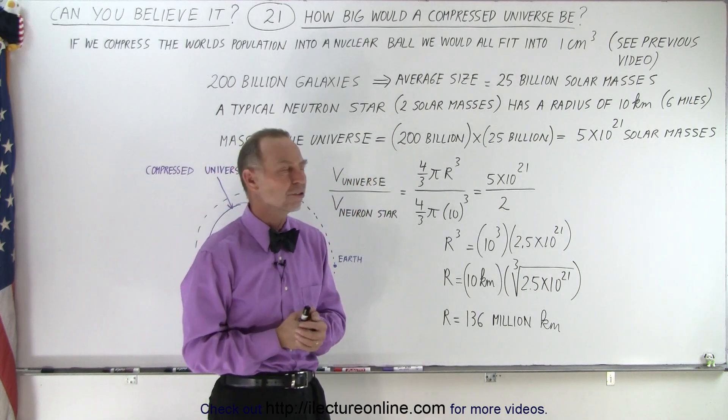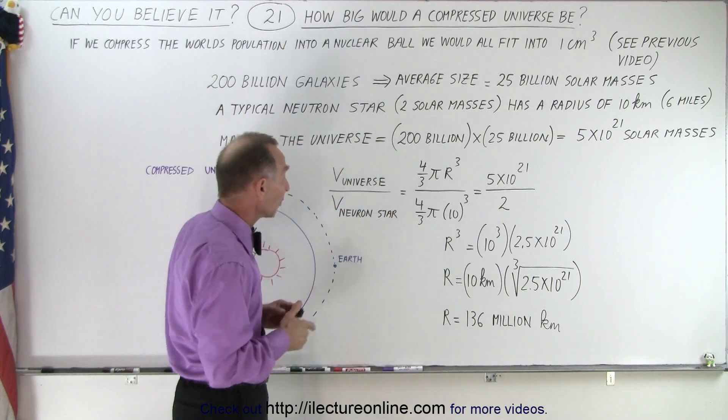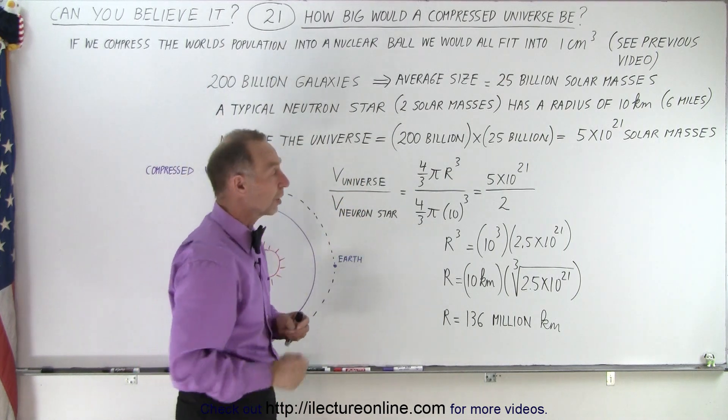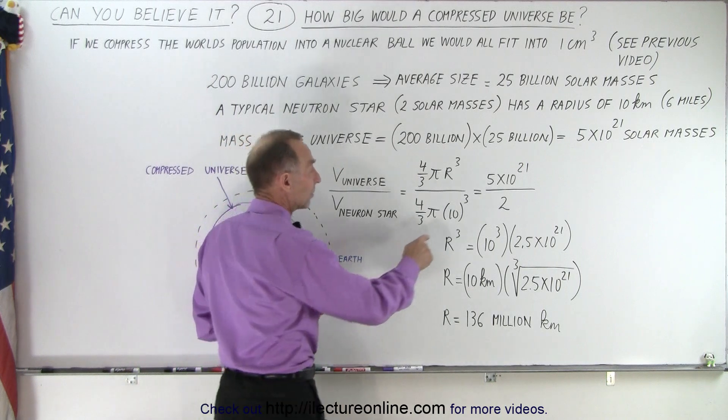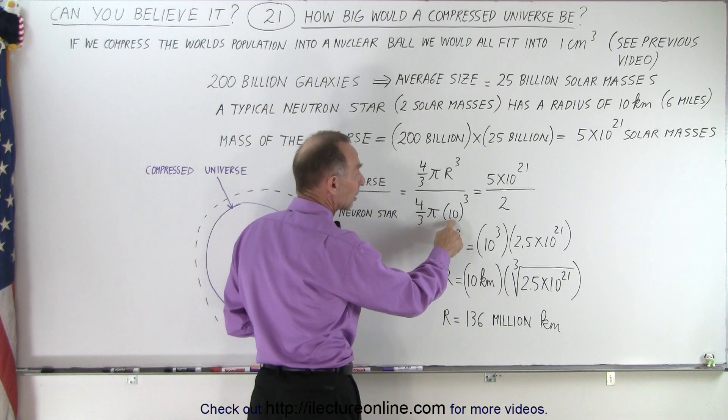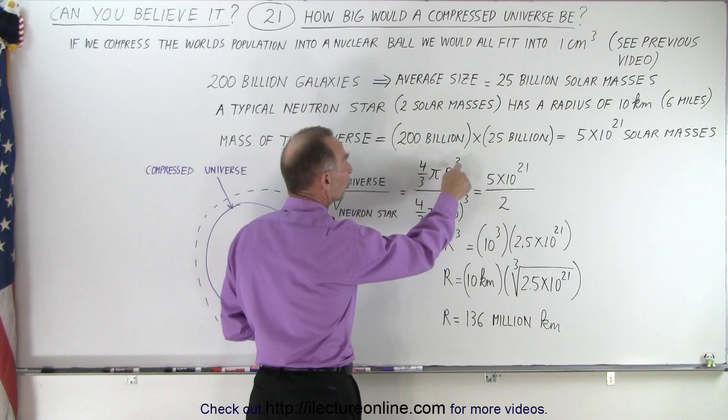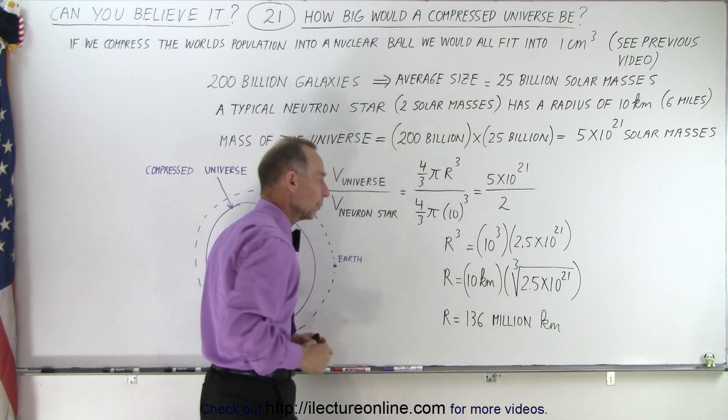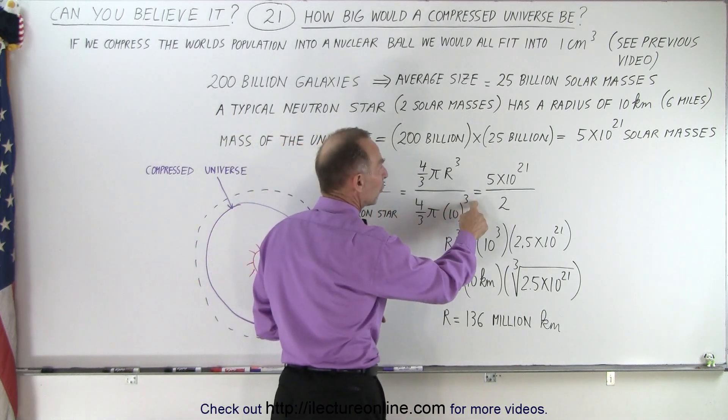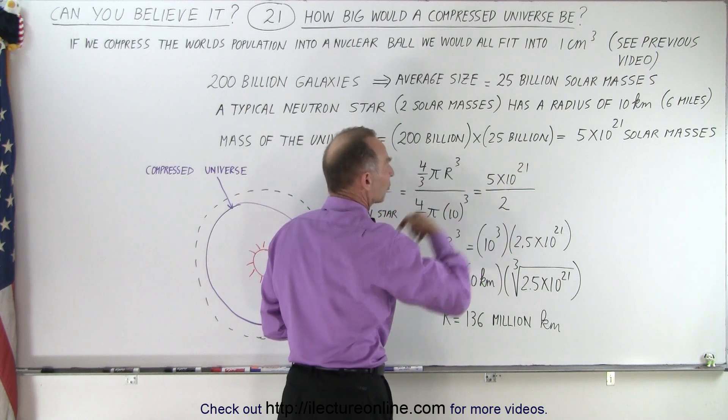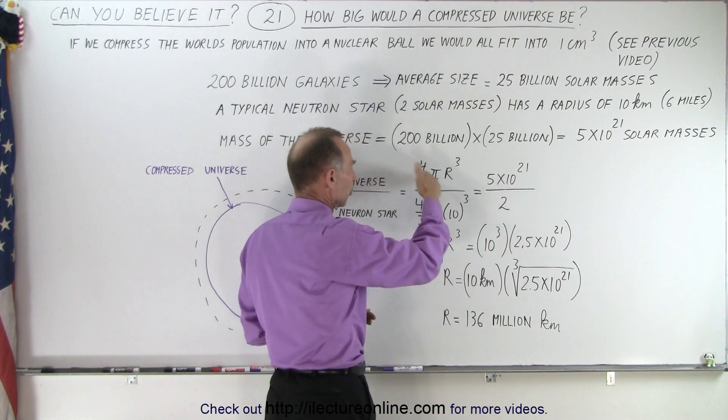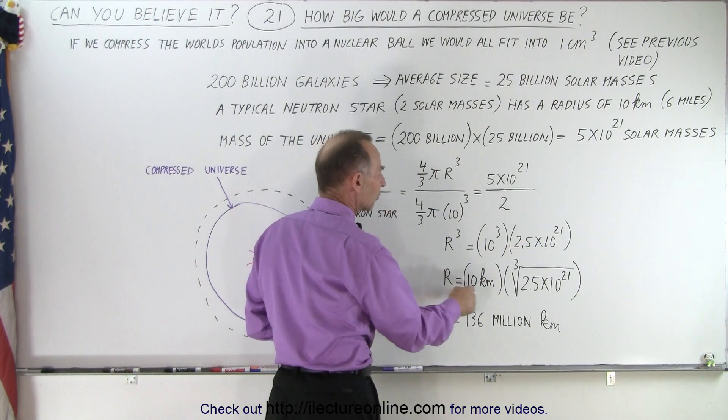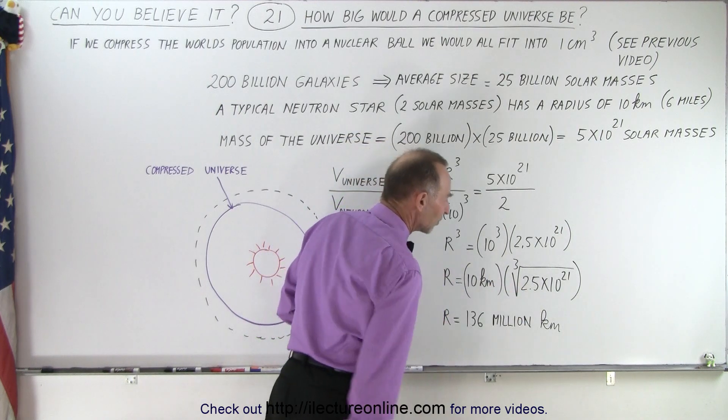If we compress it all, we find the ratio between the volume of the universe versus the volume of a neutron star. We have 4/3πr³, r being the radius of the compressed universe, and 10 billion kilometers being the radius of the neutron star. We set that equal to the ratio of solar masses. The 4/3π cancels out, r³ equals 10³ times this, so r equals 10 km times the cube root of 2.5 times 10^21.